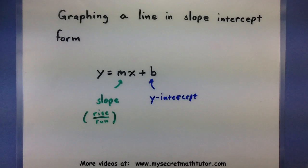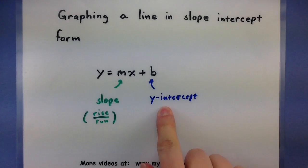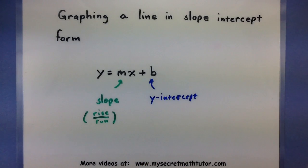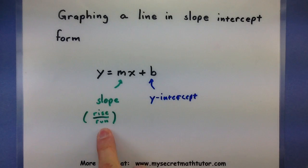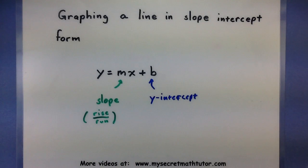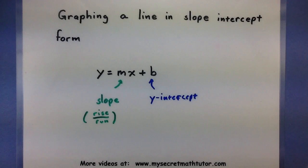In practice, the way you use these two bits of information is you start where the y-intercept is, and then you use the slope to find another point on that line. Once you have two points, you simply connect the dots and there you have your line.